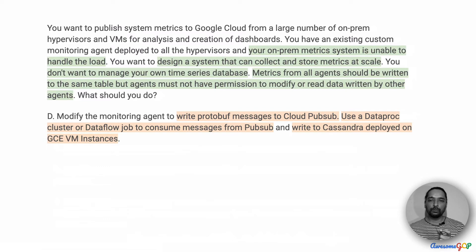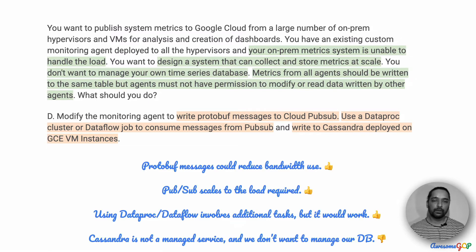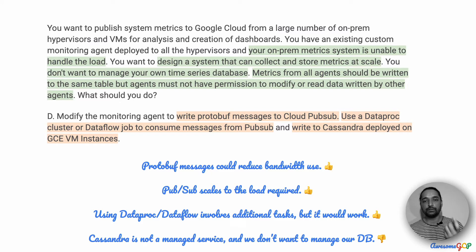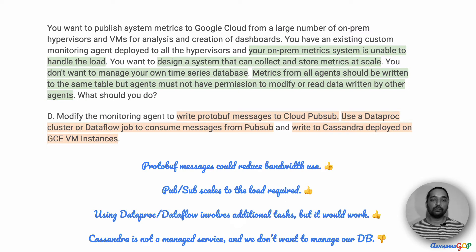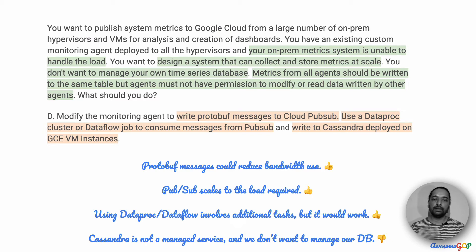Option D suggests that we write protobuf messages to Cloud Pub/Sub, then use either a Dataproc or Dataflow job to consume messages from Pub/Sub and write to Cassandra deployed on GCE VM instances. Using protobuf to send data could reduce bandwidth use — there's less data to send because of the binary protocol, so it reaches faster and there's less network cost. Having Pub/Sub as a frontend endpoint is very useful because it scales to the kind of load required. From Pub/Sub we can read using Dataproc or Dataflow to consume and process the messages — this part would work.